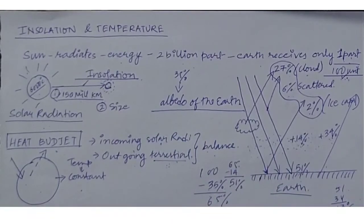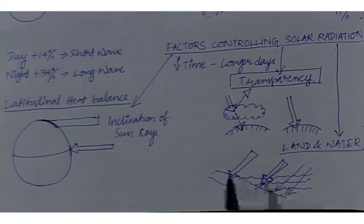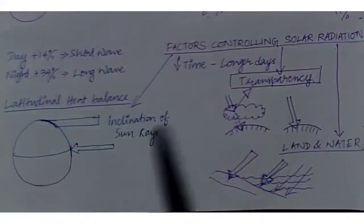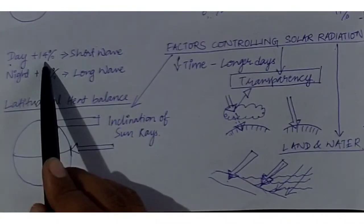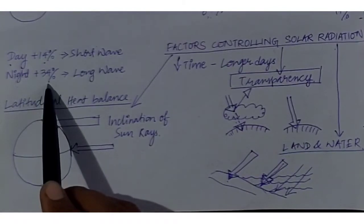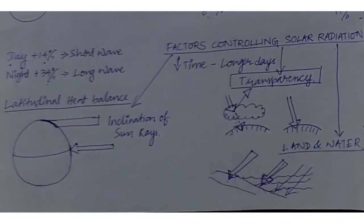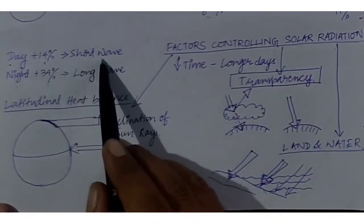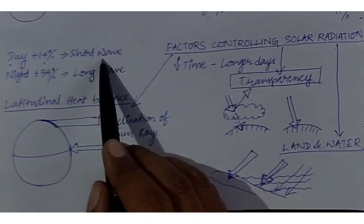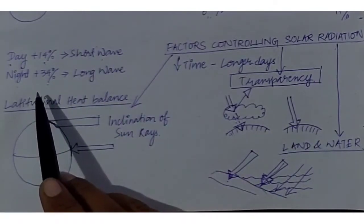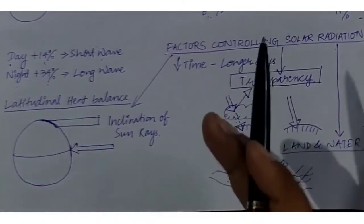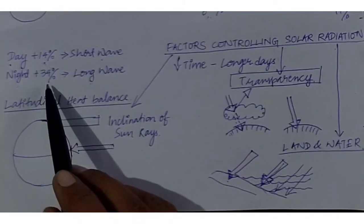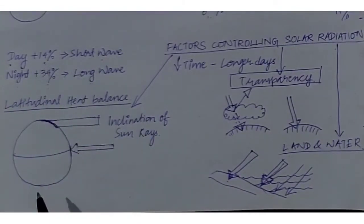The Earth's atmosphere absorbs certain amounts of both solar radiation and terrestrial radiation. During the daytime, 14 percent of solar radiation is absorbed by the atmosphere, and during the night, 34 percent of terrestrial radiation is absorbed. This variation exists because daytime solar radiation arrives as short waves, while the heat radiated back from Earth's surface at night is in the form of long waves. The atmosphere is a better absorber of long wave radiation, so more heat is absorbed at night.